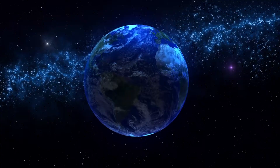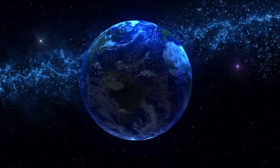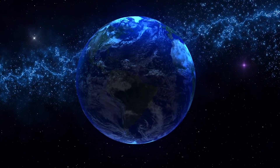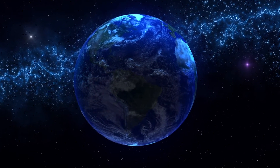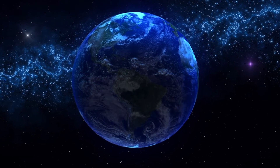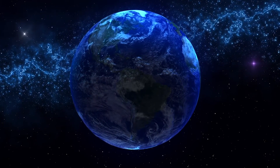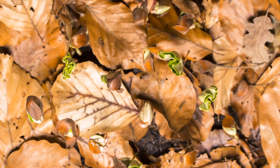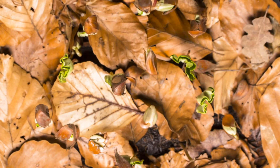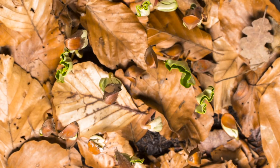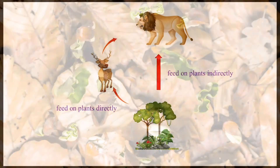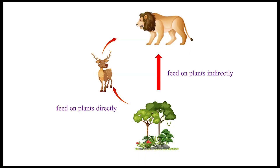As we know, our Earth is the one and only planet that has life. What is the main reason for it? Because plants established on the Earth before animals. All animals depend on plants directly or indirectly.